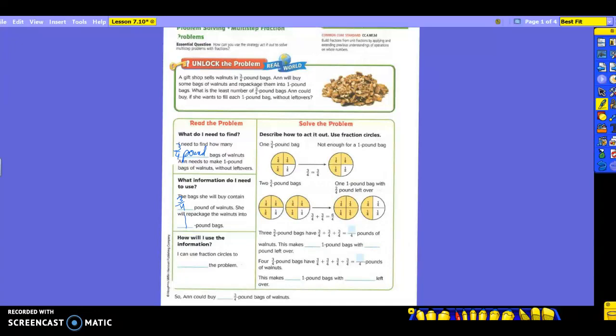So it says, how will I use the information? I can use fraction circles to blank the problem. What am I doing when I have fraction circles over here? Think about some of the strategies that we've talked about. What do we call it when we draw it all out or we get it all out? We call it acting it out. So I can use fraction circles to act out the problem.